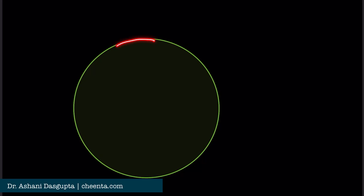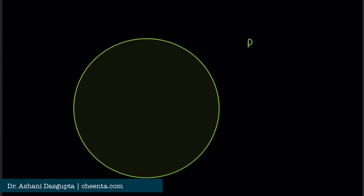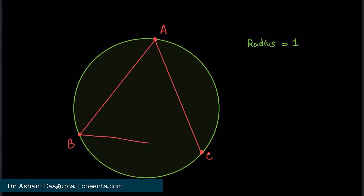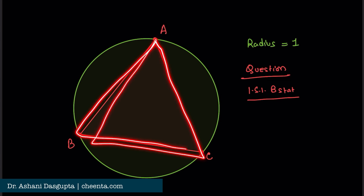Suppose you have a unit circle — a circle where the radius is one. You have three points on the circle: A, B, and C. You can choose any three points, and when you do, you automatically get a triangle ABC. The question, which came in the ISI B.Stat entrance exam, is: which triangle has the largest possible area?